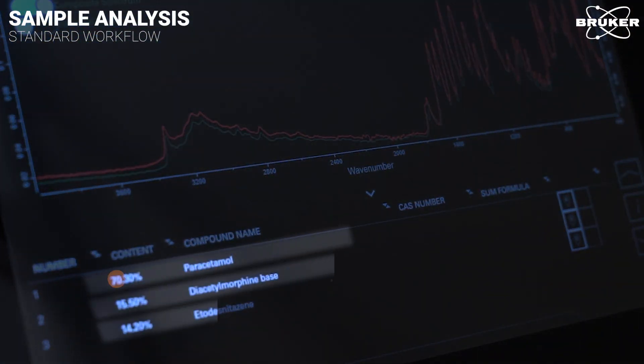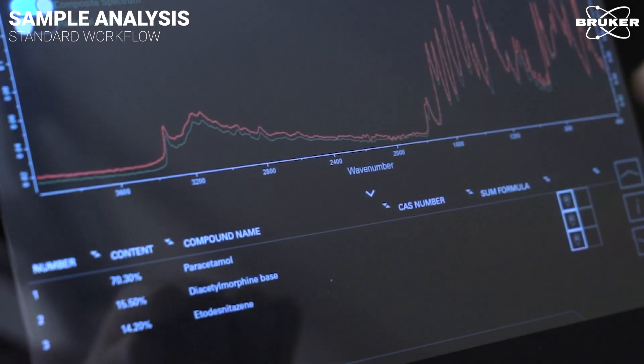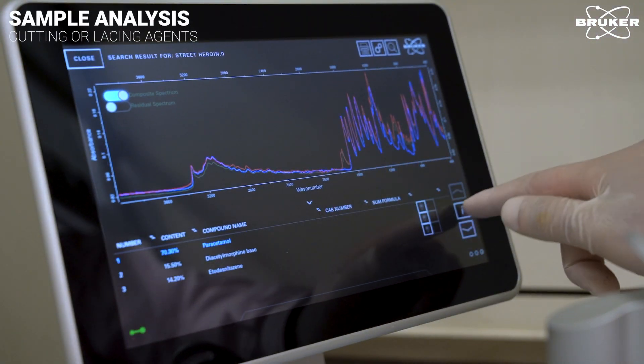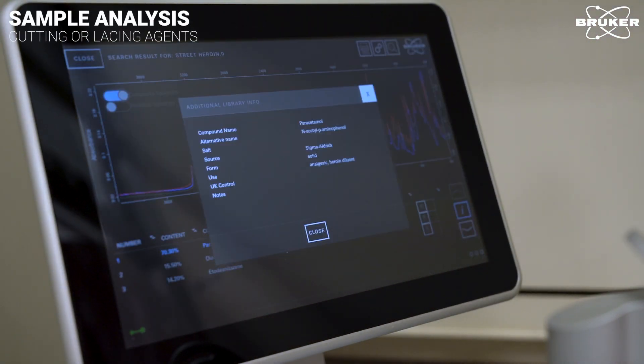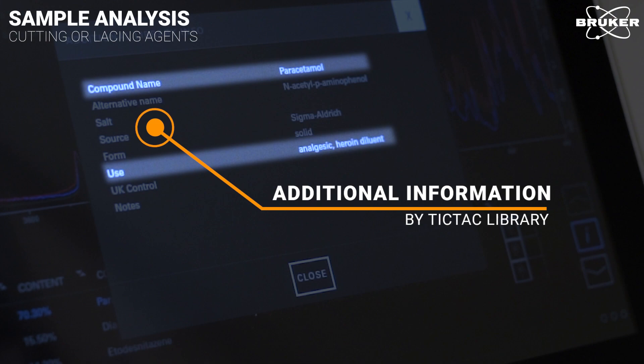Fortunately, FTIR spectroscopy provides a complete breakdown of the drug sample by using dedicated spectral reference libraries. A comprehensive list of ingredients yields information on the composition of the street drug. Additional information on identified drugs and lacing or cutting agents is provided by the TicTac library.